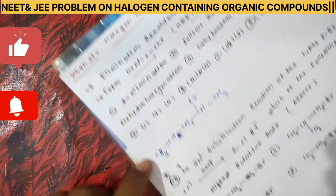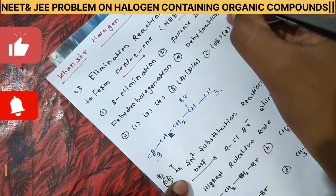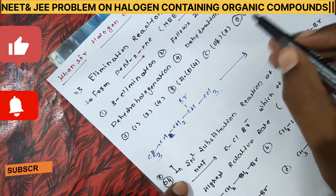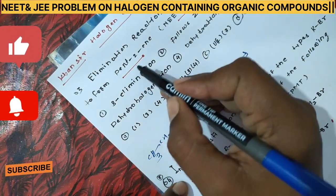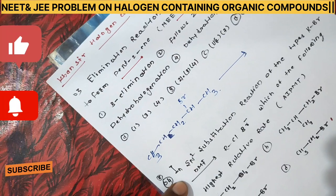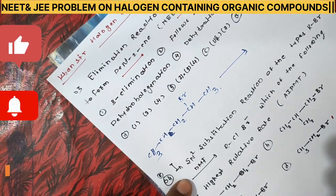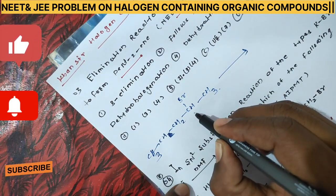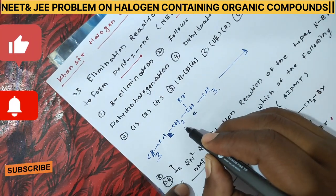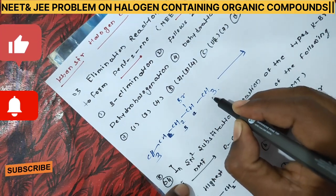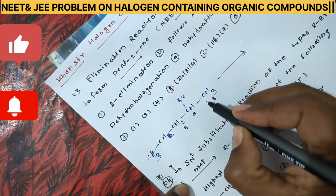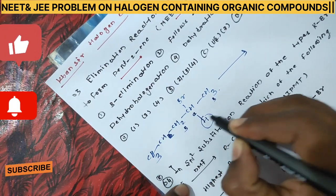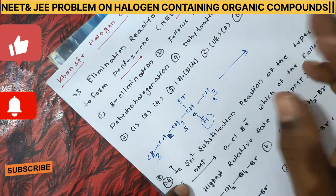So 2-bromopentane is our reagent. An elimination reaction is occurring, and we get pent-2-ene. This is a type of beta elimination reaction. Here is your alpha carbon atom, and these are your beta carbon atoms on both sides. In beta elimination, a hydrogen atom is removed from the beta carbon.